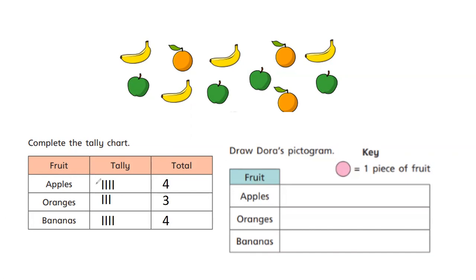In my first row, apples, I have one, two, three, four tally lines with a total of four. So I'm going to draw four circles: one, two, three, four. Oranges next: I have one, two, three tally lines, a total of three, so I draw one, two, three. It's really important when drawing your pictogram to have your images all lining up in columns, so the three oranges line up under the first three apples. This makes it a lot easier to compare how many different pieces of fruit I have.